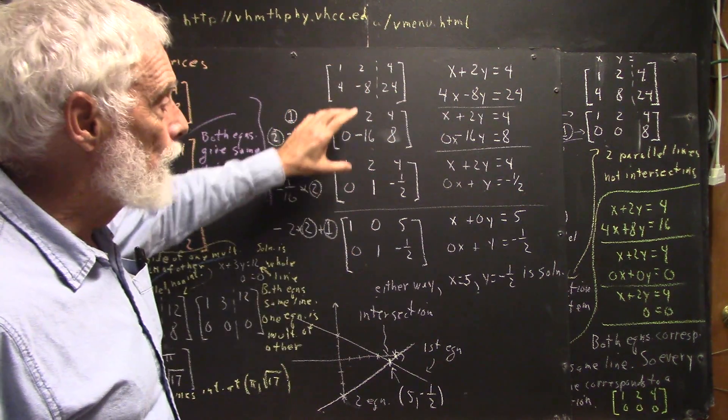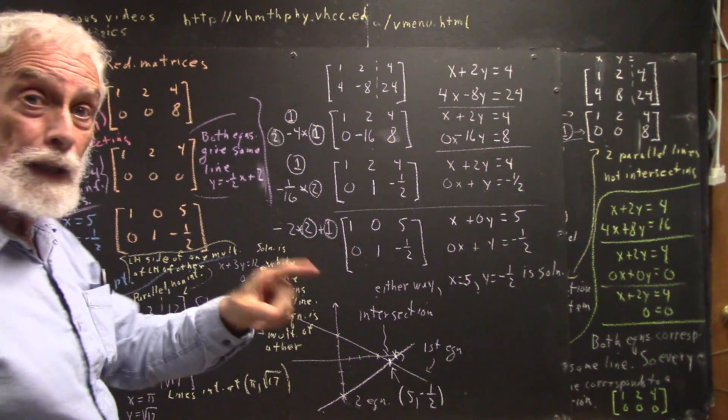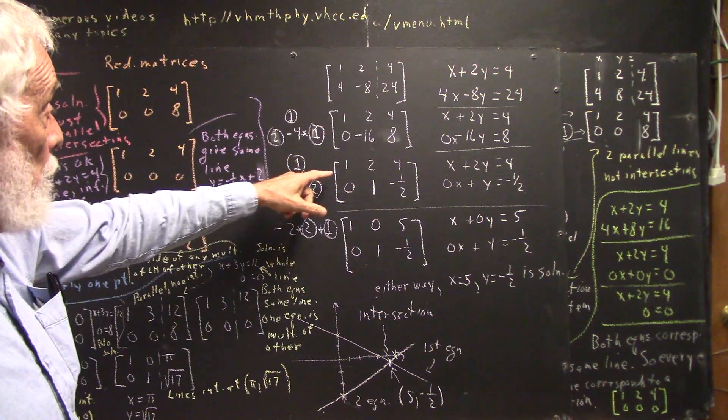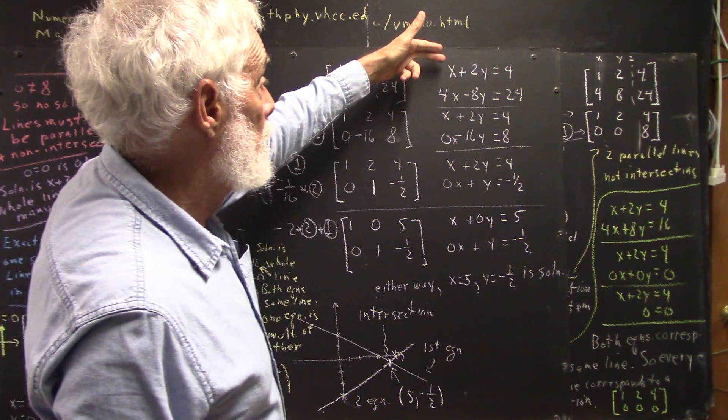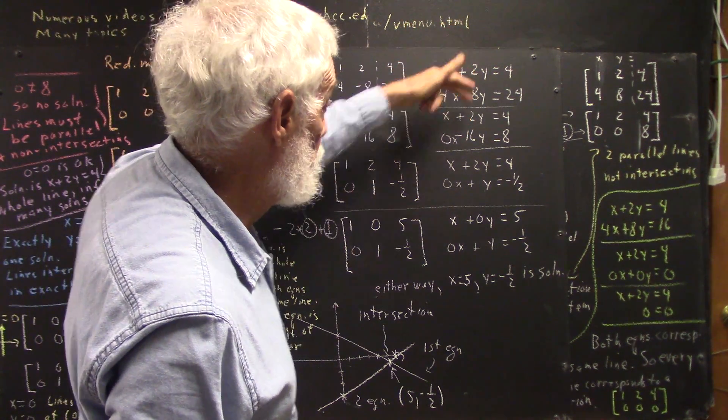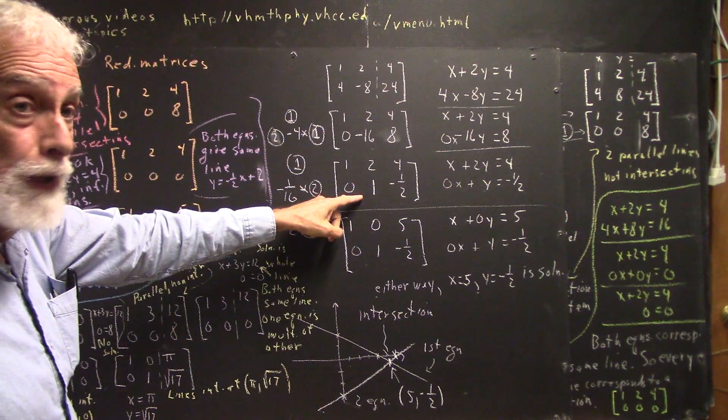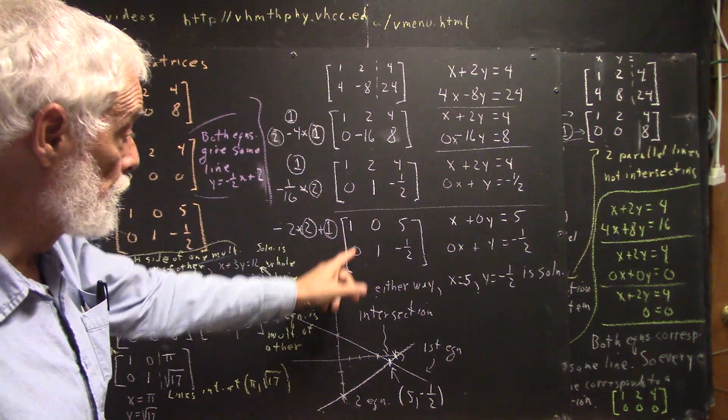Okay, so just to make that connection. In the one case where we had a unique solution, the A matrix, which for this system would be 1, 2, 4, negative 8, does reduce to the identity matrix, 1, 0, 0, 1.